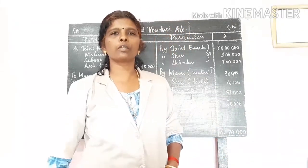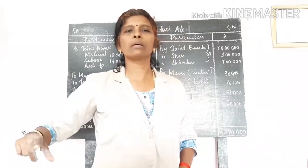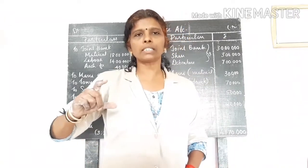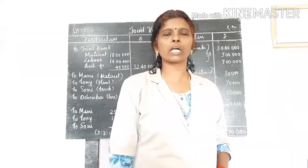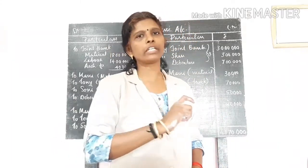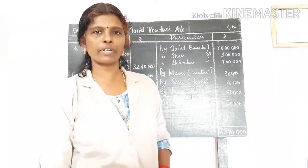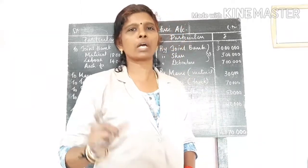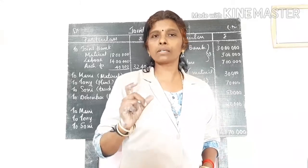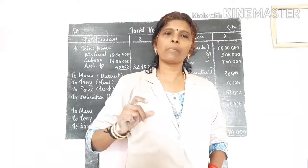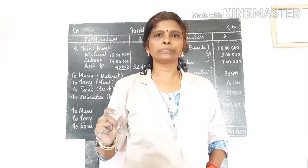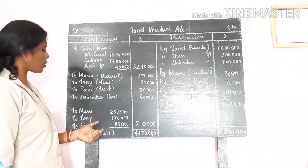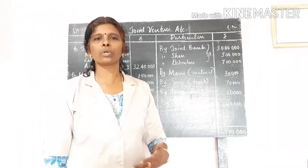We have to take over the last problem. You can make a joint bank account and record the transactions. We roll out the joint bank account — opening the account by joint bank account to the bank account. This is the current bank account. First, you have to take a balance about it; you can make any bank account for joint bank account. And you can make an account for joint venture account. The venturers are Money, Tony and Sony.